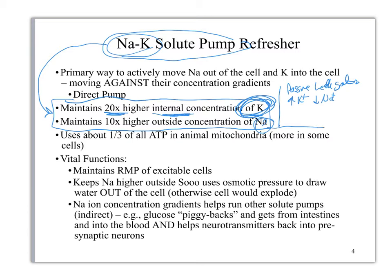Potassium is the most important thing that it's moving around, and it uses a lot of energy. Notice it's using a third of all the ATP energy in that eukaryotic cell. So for vital functions you've got maintaining the resting membrane potential, which is what we talk about most of the time. But when you get into pathophysiology, this part of that solute pump becomes really, really important. It maintains an osmotic pressure in order to draw water out of the cell.